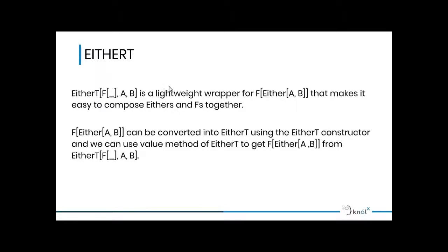EitherT is a wrapper for an Either which is wrapped inside any other effectful type. The definition says that instead of using an Either wrapped inside an effectful type, we have EitherT which takes three parameters: first is the type constructor the Either was wrapped into, second is the Left value, and third is the Right one. So instead of using Either wrapped inside an effectful type, we can use EitherT to make our code more readable and easier to work with.